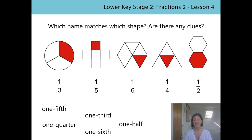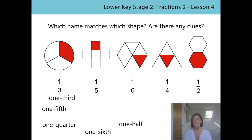How did you get on? Have you managed to match them all? Let's share ideas together. So this first shape, we've got a denominator of three. Could you spot the name that's got that sound in it? Yes, it's one third. Let's all say that together - one third. The next shape, what's the denominator? It's five. And can we spot the name that's got a similar sound in it? It's one fifth. Let's say that all together - one fifth.